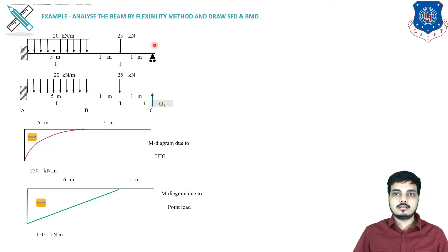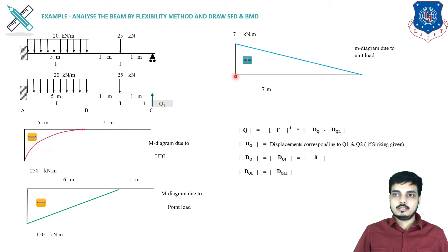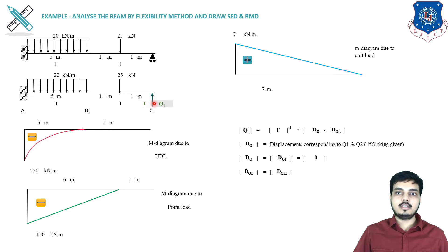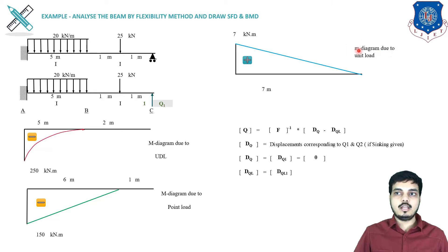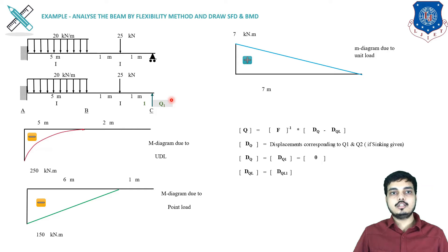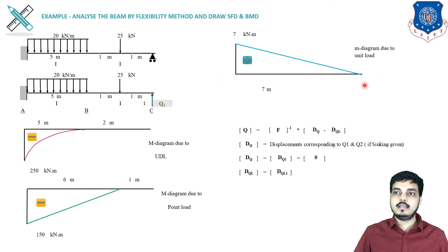Now we move towards the redundant diagram — the small m diagram due to the unit load. I have placed Q1 = 1 unit load. So 1 × 7 = 7 kNm is my small m diagram for the unit load. Small m is related to the redundant. We always take the redundant as a unit load as per the formula: apply unit load and find the displacement. Since it is a point load, the diagram is a straight line (triangle).